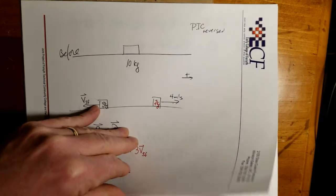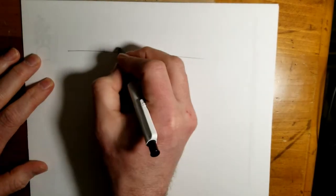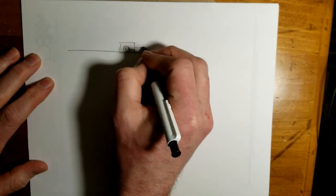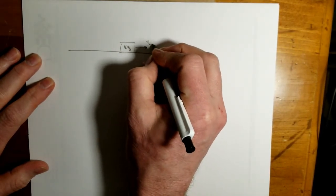Now let's add a slight twist to it. Not real complicated. If this is the 10 kilogram box, and it's heading in this direction at 3 meters per second.